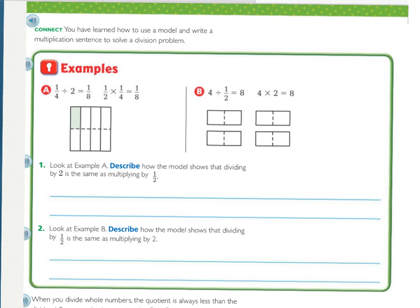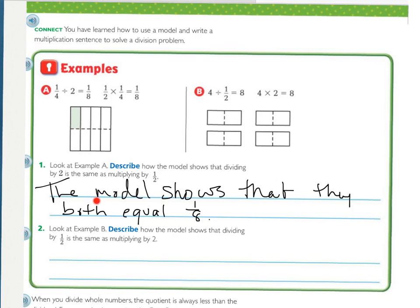So we had 1/4, 1, 2, 3, 4 pieces, but we only needed 1/2 of one of those 4ths. So they divided it in half, and then shaded in 1 piece. So looking at example A, describe how the model shows that dividing by 2 is the same as multiplying by 1/2. For this first one, I've just given you the sentence. It says the model shows that they both equal 1/8, because it's true. We walked through that.